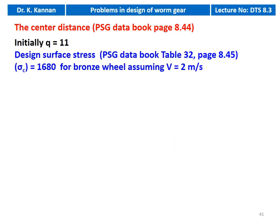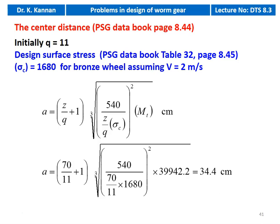We calculate the center distance from page 8.44. We take diameter factor Q equal to 11 and design compressive stress from table 32: sigma_c = 1680 for bronze wheel, assuming velocity equal to 2 m/s. Center distance A = (Z/Q + 1) × cube root of [540 / (Z/Q × sigma_c)² × MT_design] = (70/11 + 1) × cube root of [540 / (70/11 × 1680)² × 39,942.2] = 34.4 cm.